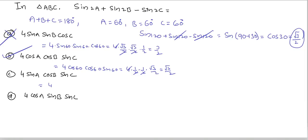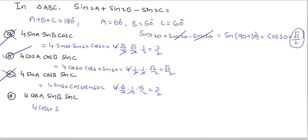Verifying the third option: 4sin60 cos60 sin60 = 4 × (√3/2) × (1/2) × (√3/2). The 4 cancels and √3 × √3 = 3, giving 3/2. This is not equal to √3/2, so the third option is wrong, and the fourth option is also wrong.